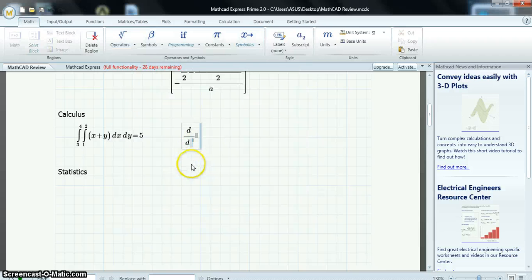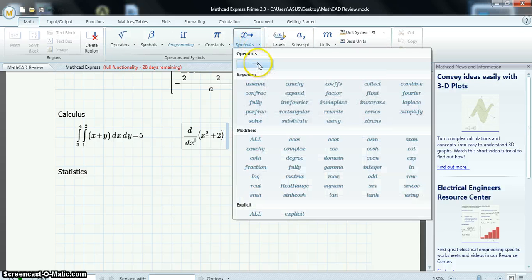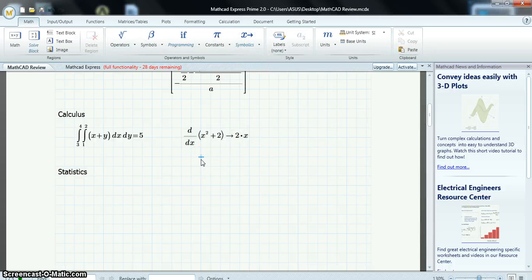And then, do differentiation. D, DX, of X squared, plus 2. And, you don't press equals. You go up to Symbolics, and do a Symbolic Evaluation. And, there's the answer.